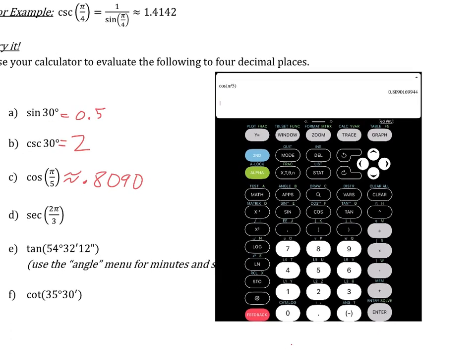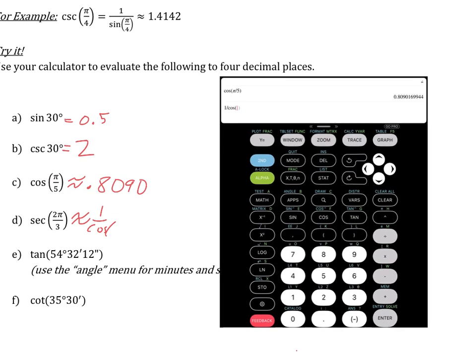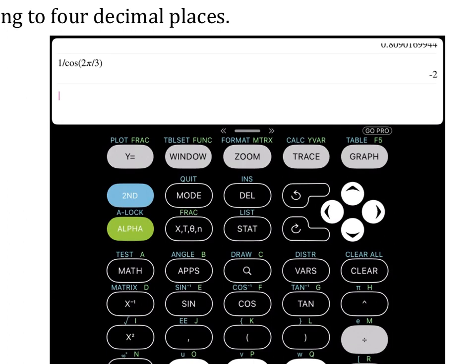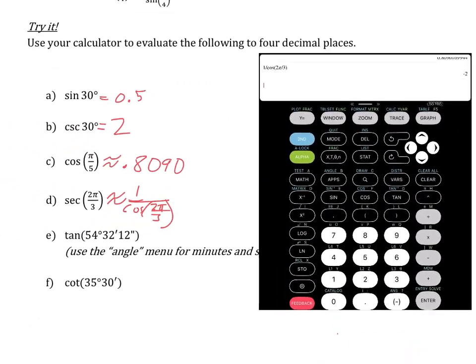Next, we're going to have the secant of 2 pi over 3. Secant is 1 over cosine. So again, we're going to do 1 divided by cosine. Secant and cosine go together. And we're going to have 2 pi divided by 3. 2 pi over 3 is the same as 2 pi divided by 3. Now you can also use this in Desmos, and it looks a little prettier, but this is how we do it in our calculator, and we get negative 2.